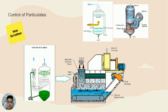Wet Scrubber. A wet scrubber is an air pollution control device which uses a liquid to remove contaminants from a gas stream. The removal process is achieved by bringing the gas stream into contact with the scrubbing liquid, which facilitates mass transfer of the contaminants into the liquid.